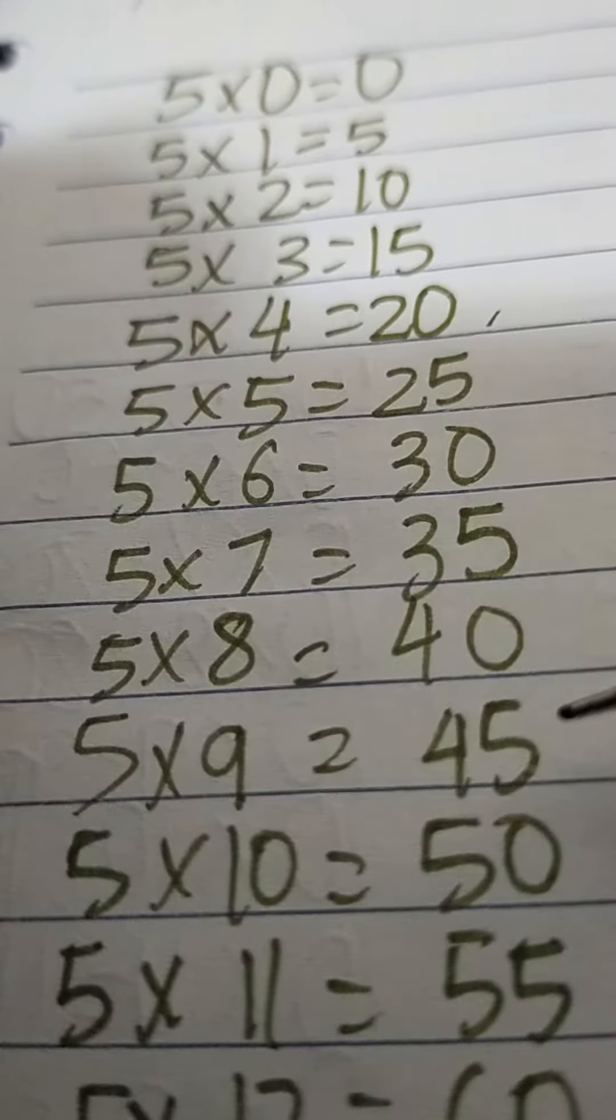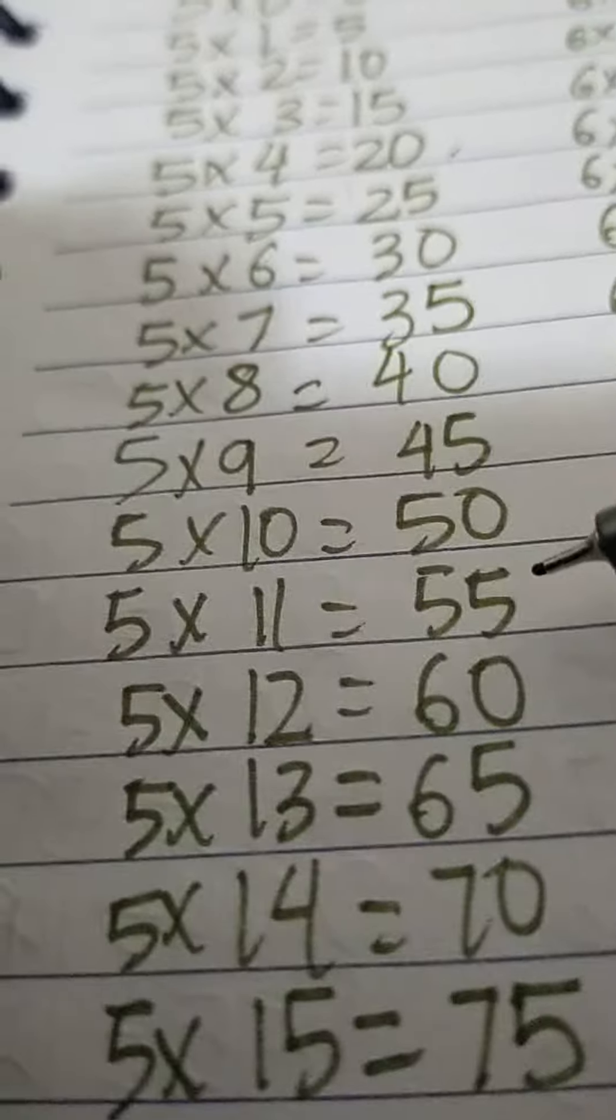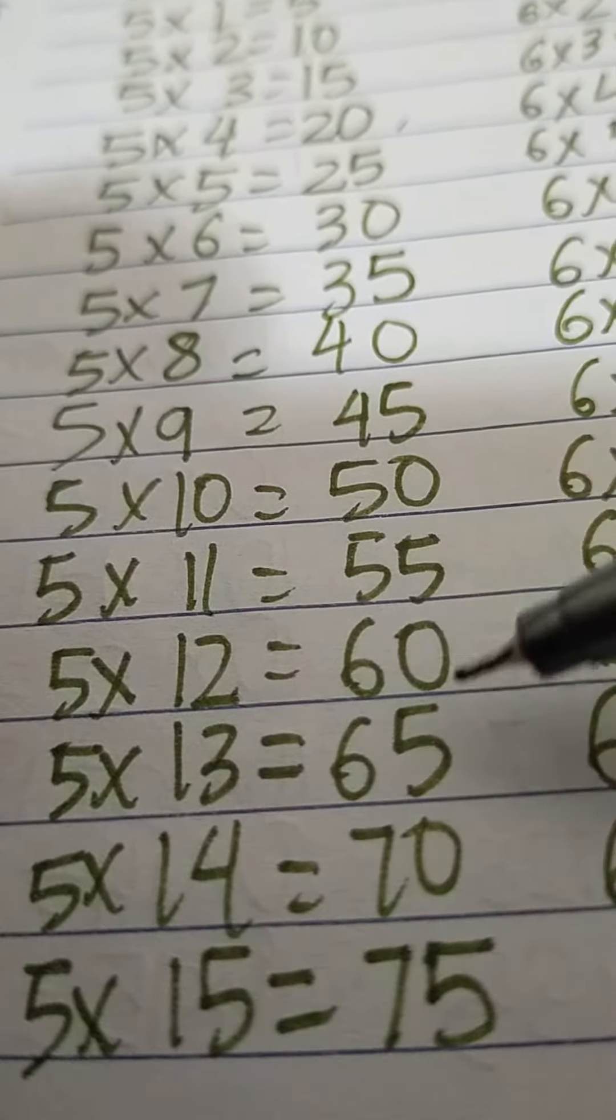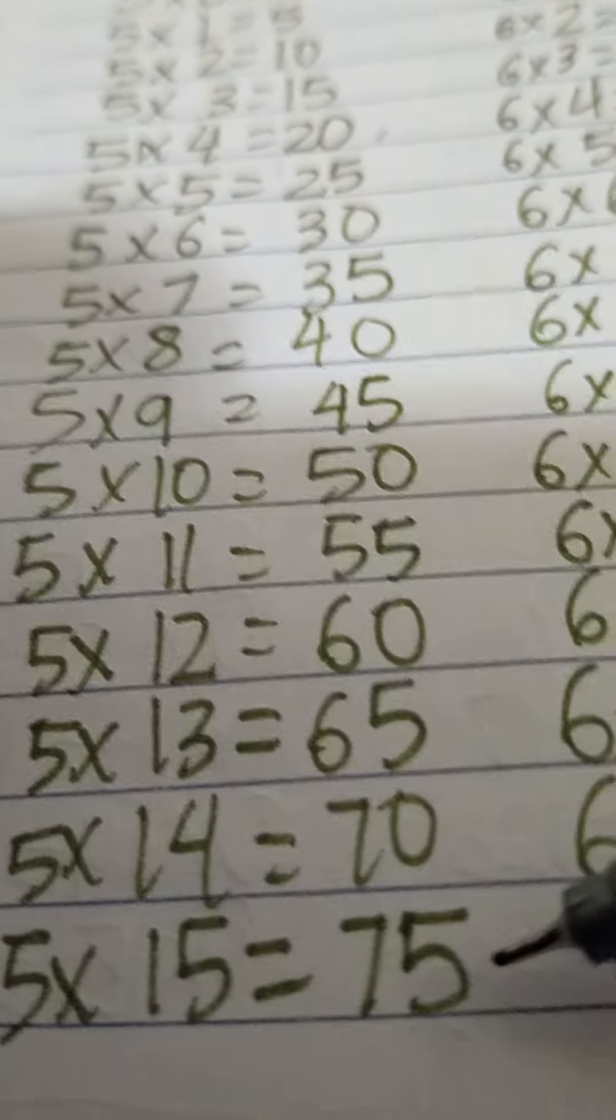Five times eight, forty. Five times nine, forty-five. Five times ten, fifty. Five times eleven, fifty-five. Five times twelve, sixty. Five times thirteen, sixty-five. Five times fourteen, seventy. Five times fifteen, seventy-five.